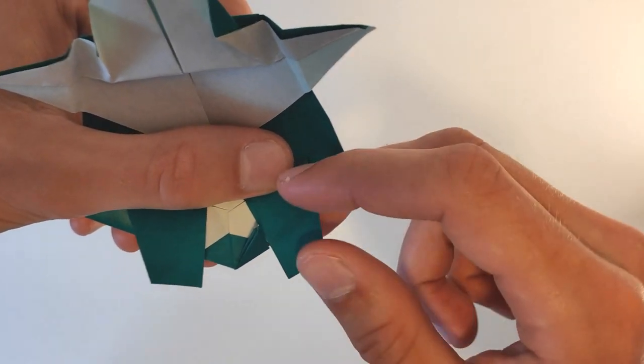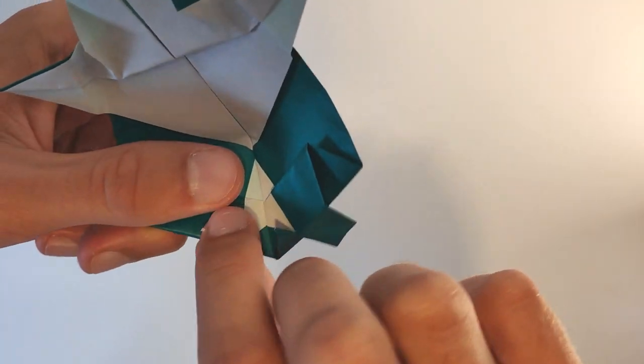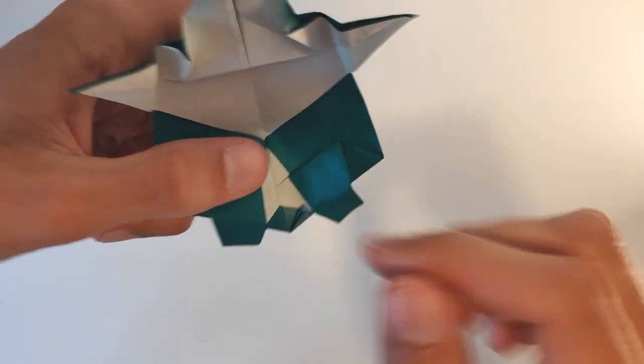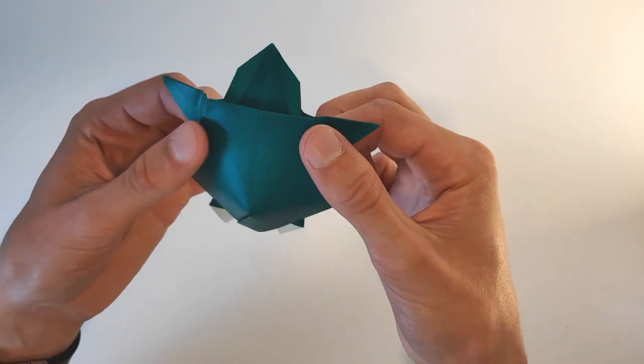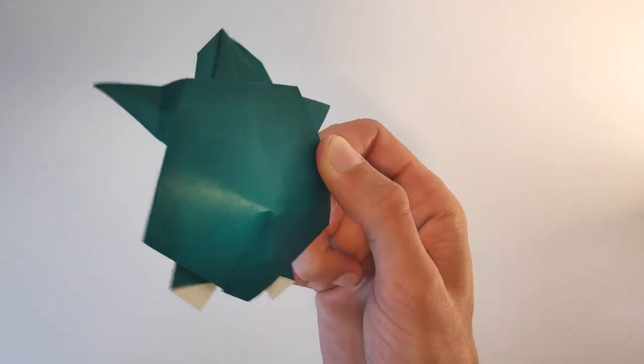And now for the hind legs, just fold them over like this. And now your origami turtle is finished.